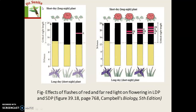Short day plants will flower when their critical night length is exceeded — when the night period is longer than the critical night length. Long day plants will flower when the night is shorter than the critical night length. If the night period is more than the critical night length, the long day plant will not flower but the short day plant will.